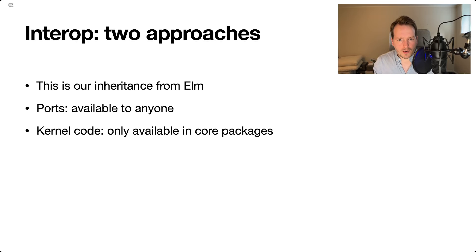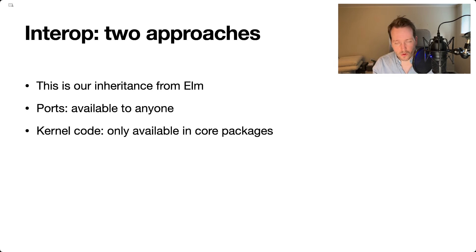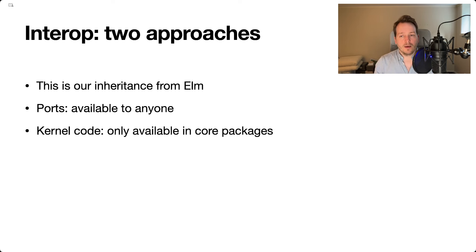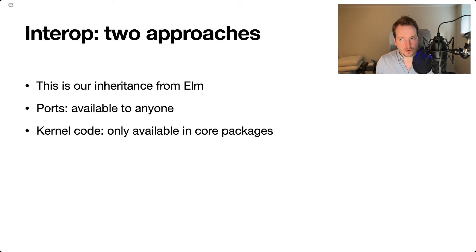The way interop works today in GREN is inherited from Elm — it works pretty much exactly the same. We have two ways of doing it: there are ports, which are available to anyone and is the documented way of performing interop, and then there is kernel code, which we try not to talk about and which is limited to core packages.